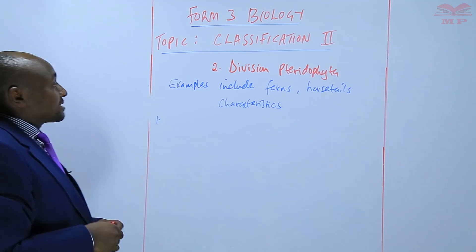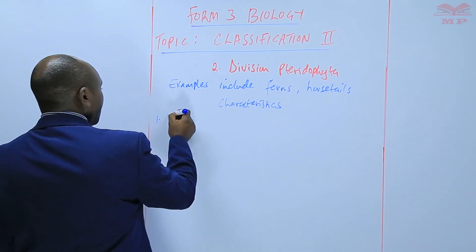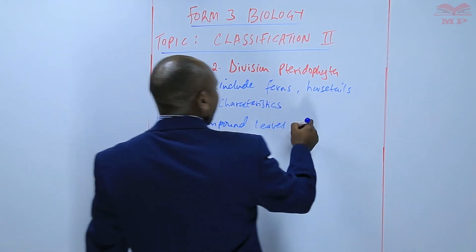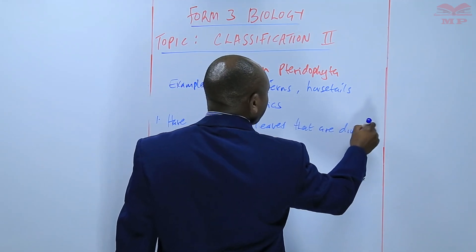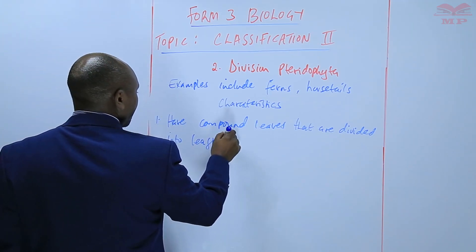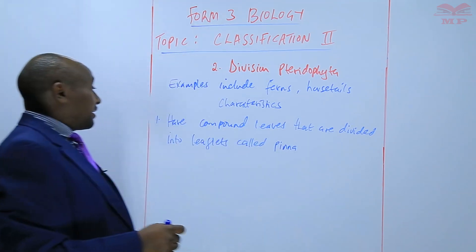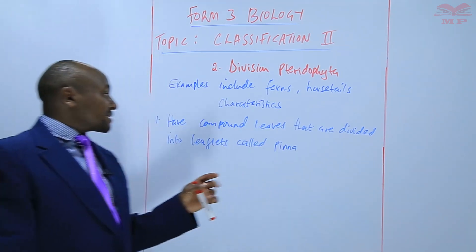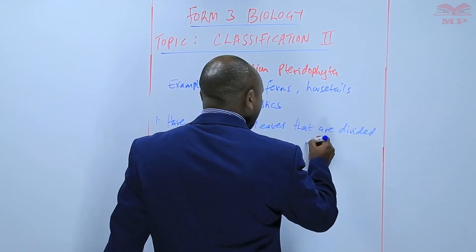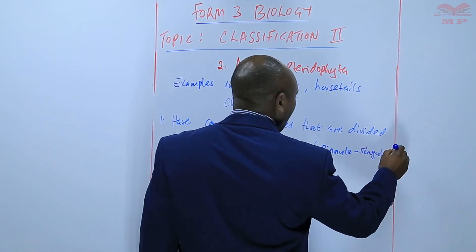Among the characteristics of Division Pteridophyta is that they have compound leaves. They have compound leaves that are divided into leaflets called pinna. Leaflets are referred to as pinna in plural, and one leaflet is called a pinna — in singular it is pinna.